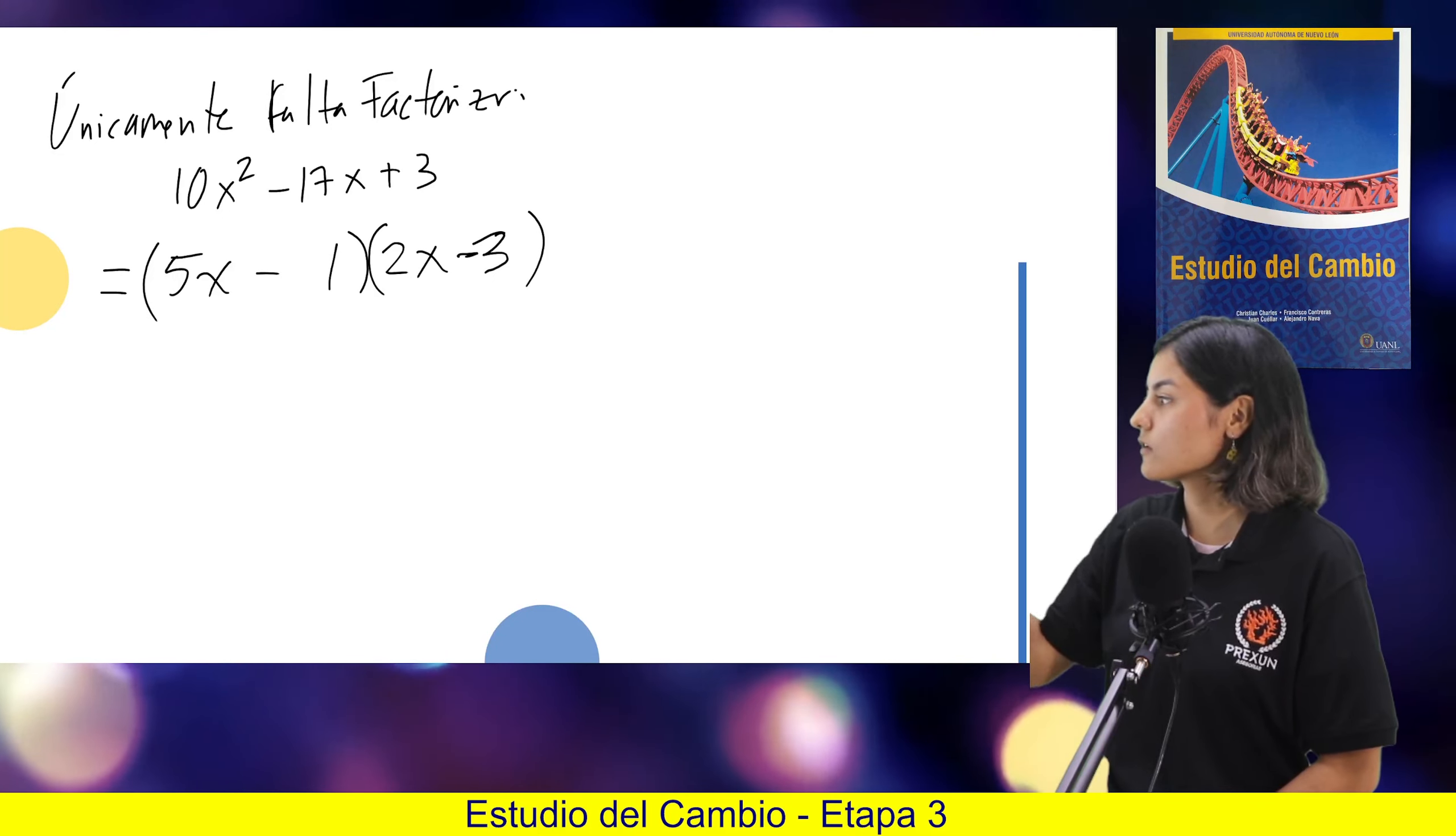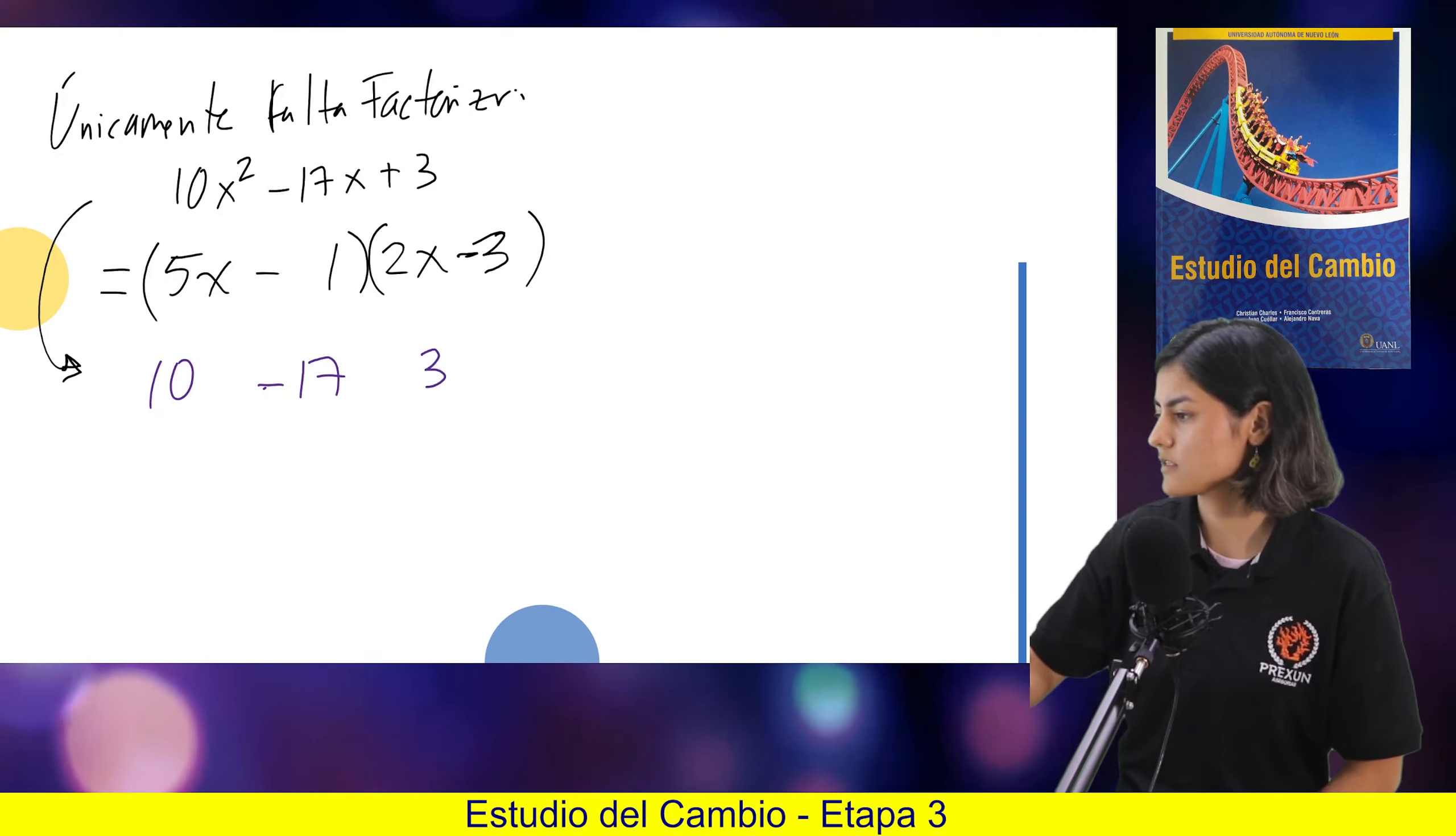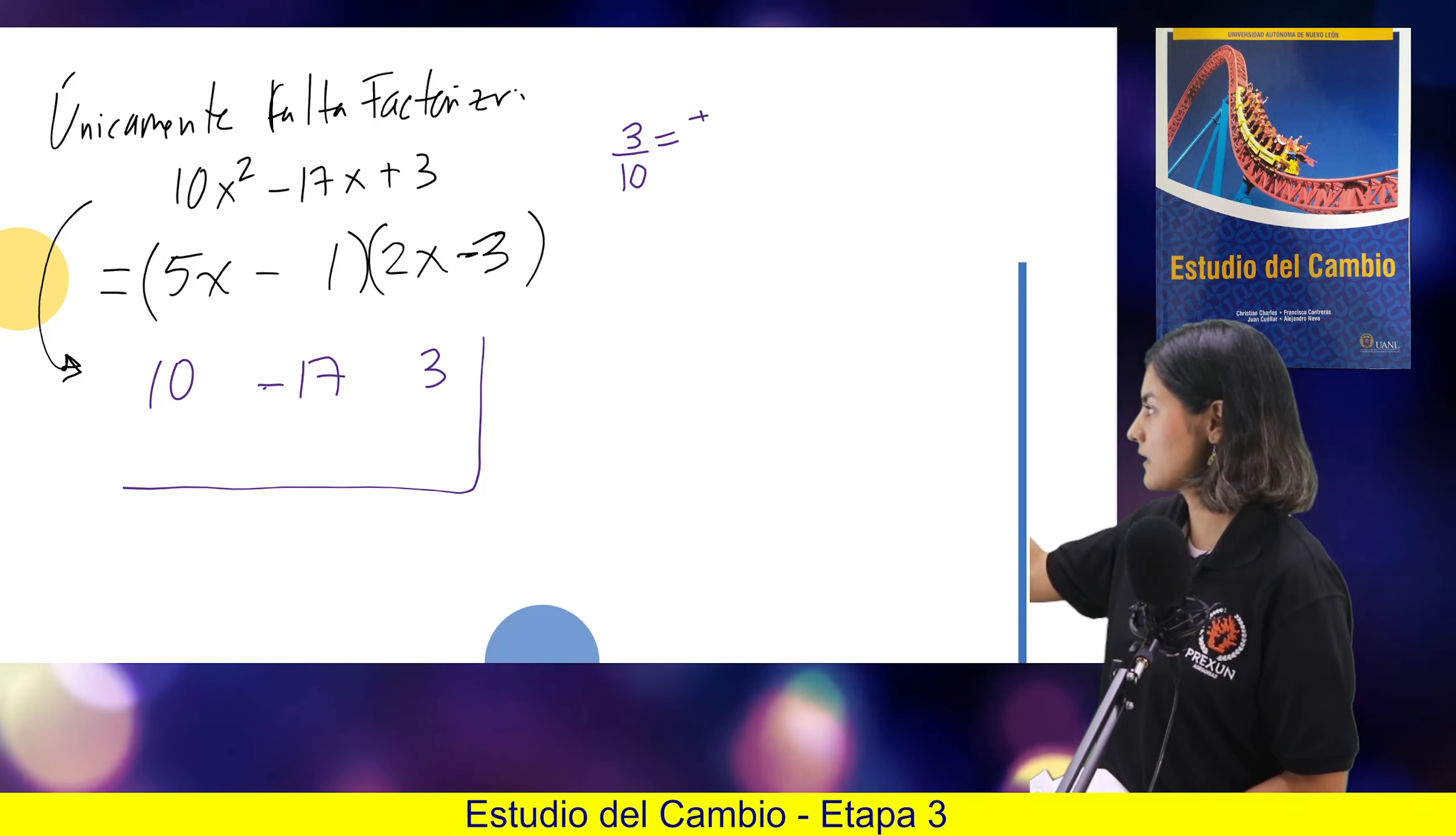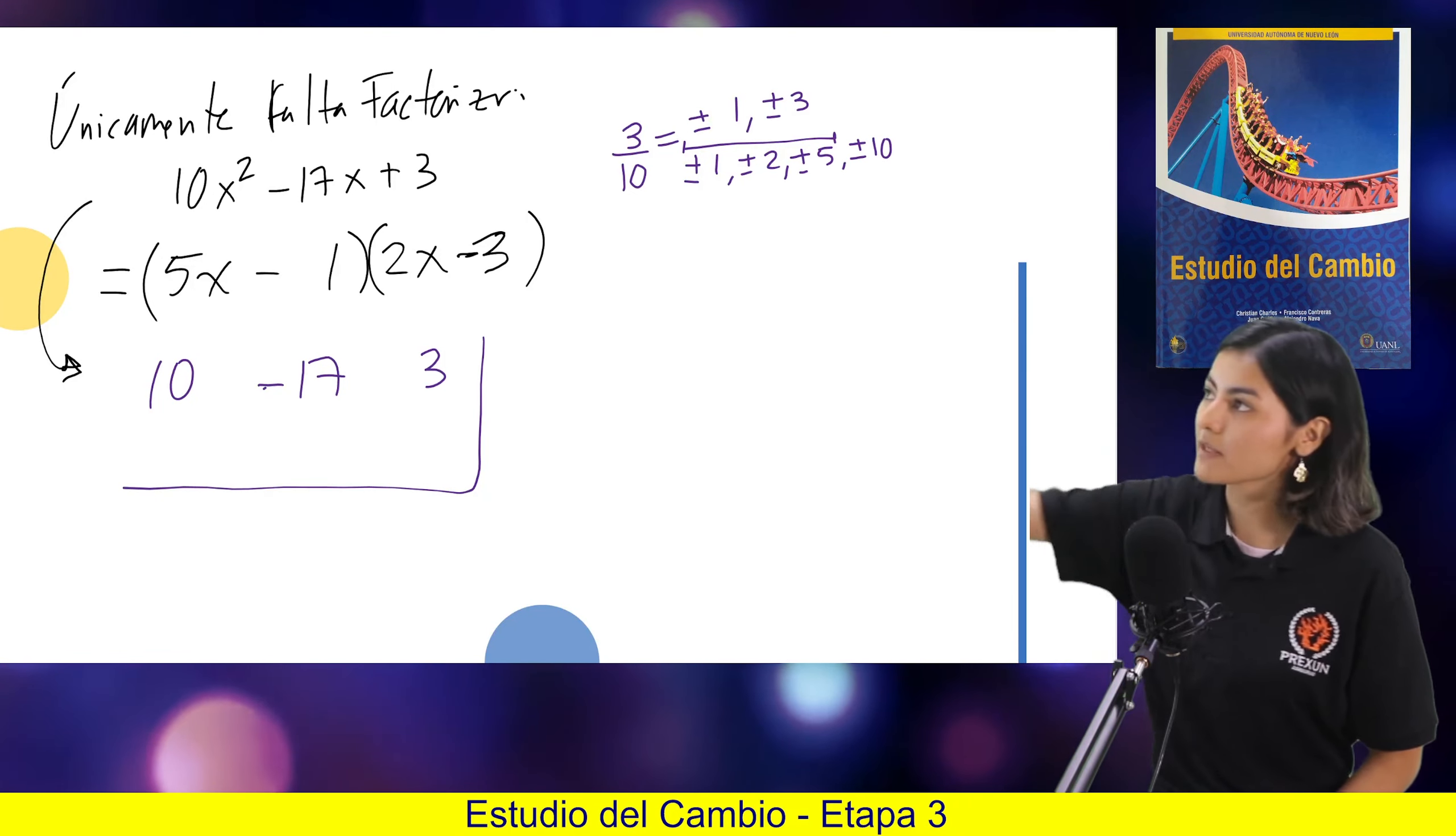Entonces, creo que este es un poquito de los más difíciles de factorizar. Y si batallan mucho en este tipo de factorizaciones que no son tan directas, podemos utilizar la división sintética sin ningún problema. Les repito, bajamos el 10, el menos 17 y el 3. Hacemos una casita. Y para las posibles raíces racionales, lo que se hace es dividir el último entre el primero. Un 3 entre 10. Y de ahí buscamos quienes dividen al 3. Al 3 solo lo divide el 1 y el 3, y los anotamos así. Y al 10 lo divide el 1, el 2, el 5 y el 10.